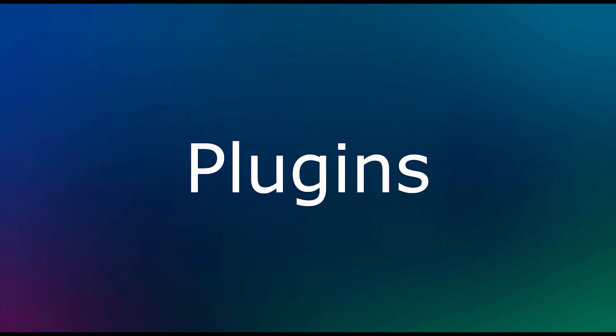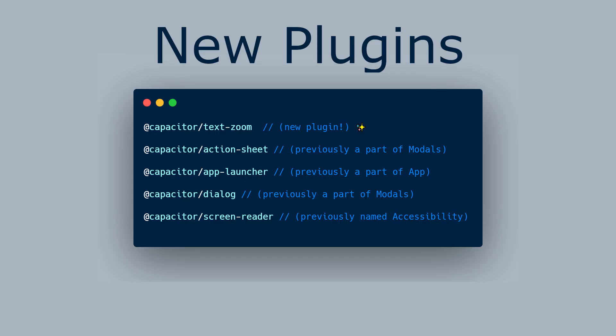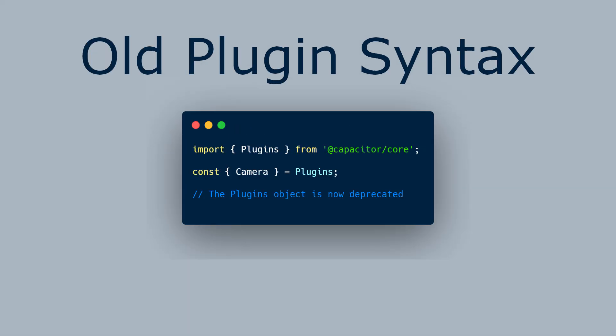Capacitor 3.0 brings with it a major architectural change to plugins. All Capacitor core plugins have been moved from the core project into their own NPM packages. This means that, going forward, the plugins will be installed and versioned separately from Capacitor core.